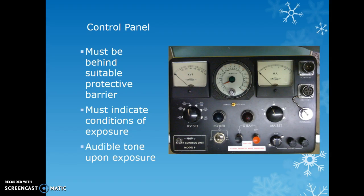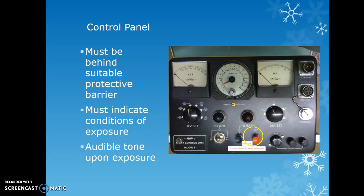The control panel must be behind a suitable protective barrier — generally outside the window of the room — so personnel don't receive unnecessary exposure. It must indicate conditions of exposure, showing KVP and mAs. There must also be an audible tone upon exposure. Newer equipment will have a visual indicator as well, usually an x-ray symbol that lights up, so you should listen for the audio and look for the visual cue.